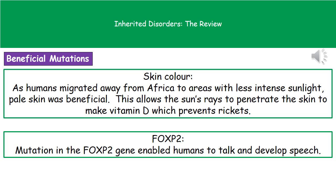The second beneficial mutation to consider is the FOXP2 mutation, which was a gene that enabled the human race to begin talking and develop speech. If we hadn't had the mutation of the FOXP2 gene, we wouldn't have speech and we wouldn't be able to talk to each other as we do today.